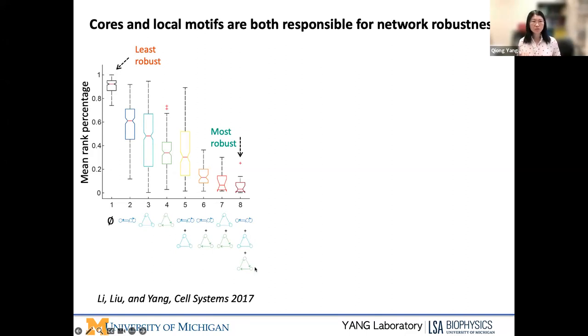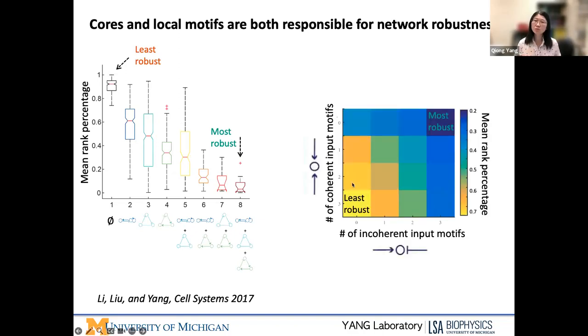We group the topologies in the atlas based on their core compositions. We found the group that are least robust are the networks that only contain non-robust cores. However, the robustness becomes higher and higher if you have more robust cores. That indicates the robust cores play an important role. However, it's not only that. We've also identified some local, we call it hidden motifs, because these motifs are not required for oscillation. However, we found they are also important to be responsible for the robustness of the network. We group the atlas topologies in two dimensions, and regardless of what cores they have, we simply count how many nodes have incoherent input interaction and how many have coherent input interactions. We found the more incoherent inputs they have, the less coherent inputs they have, the more robust they are. This effect seems to be additive.